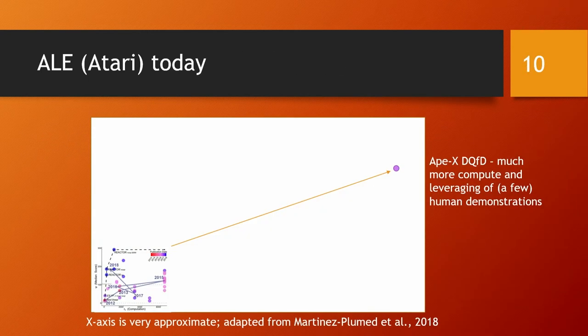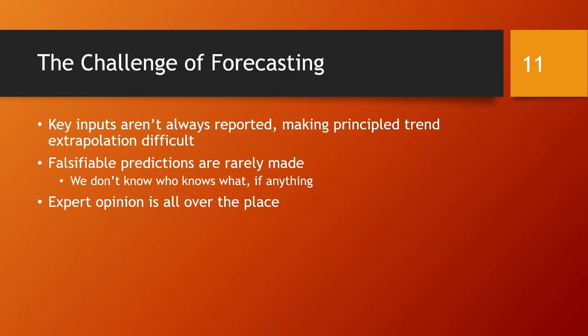This is just a few days ago. APEX DQFD used a huge amount more computation, and it also used human demonstrations. This is unlike the case of AlphaGo, where we went from human demonstrations to no human demonstrations. In this case, not only are we adding compute, but we're also adding demonstrations to allow the system to learn faster. You can tell it's completely off the scale. But this raises more general questions of how relevant are these applications that require huge amounts of computing power and human demonstrations to actual impacts.